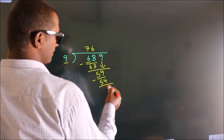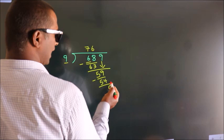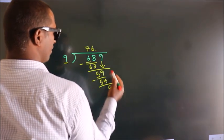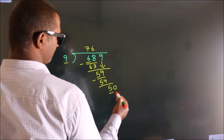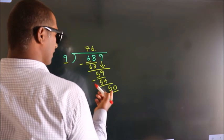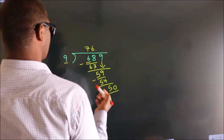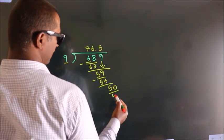After this, no more numbers to bring down. So what we do is put a dot and take 0, making it 50. A number close to 50 in the 9 table is 9 times 5, which is 45.